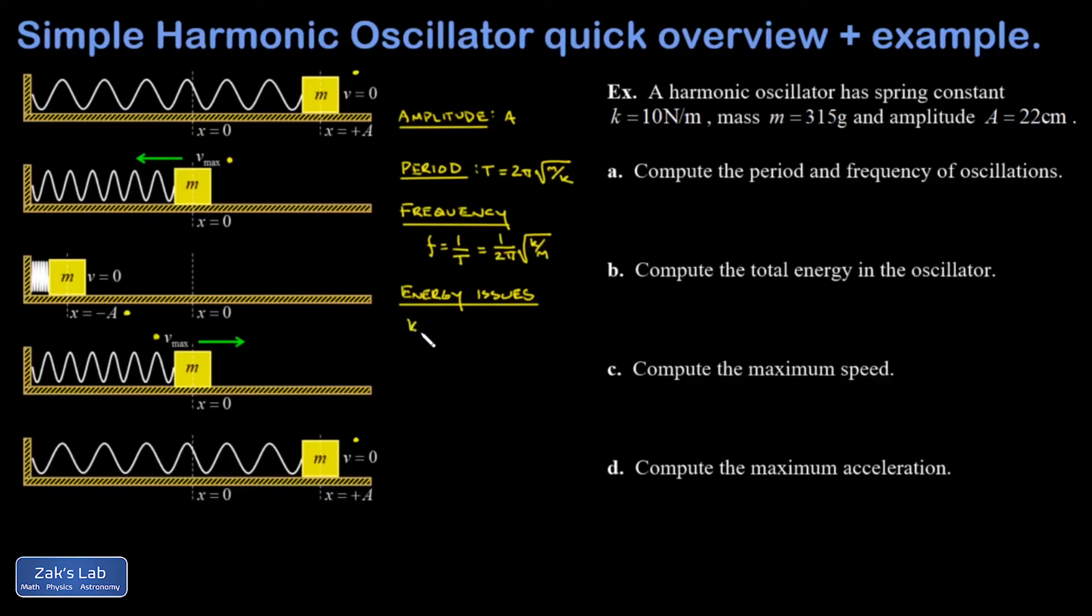Next I want to think about any energy issues going on in the simple harmonic oscillator. The kinetic energy at any moment is one half mv squared, and the potential energy at any moment, that's the spring potential energy, is one half kx squared. Provided we don't have any friction, the total energy is going to be a constant, and at any moment in time that's given by one half mv squared plus one half kx squared, and it always adds up to the same number.